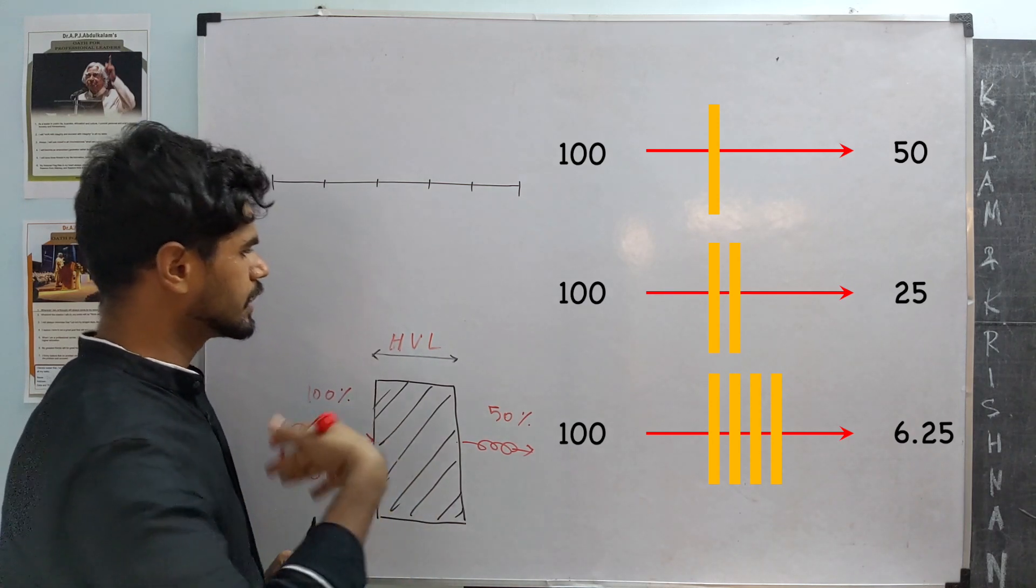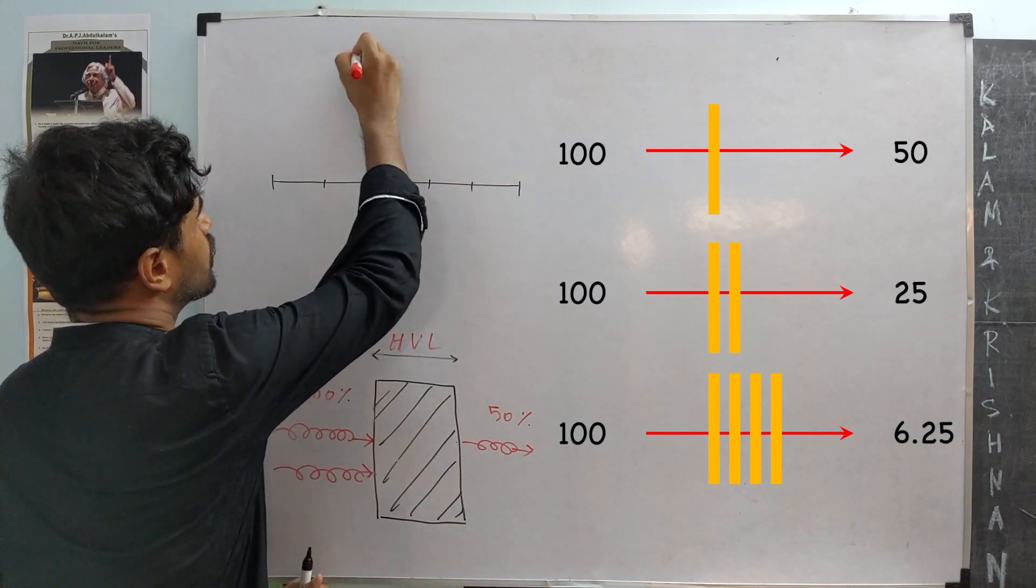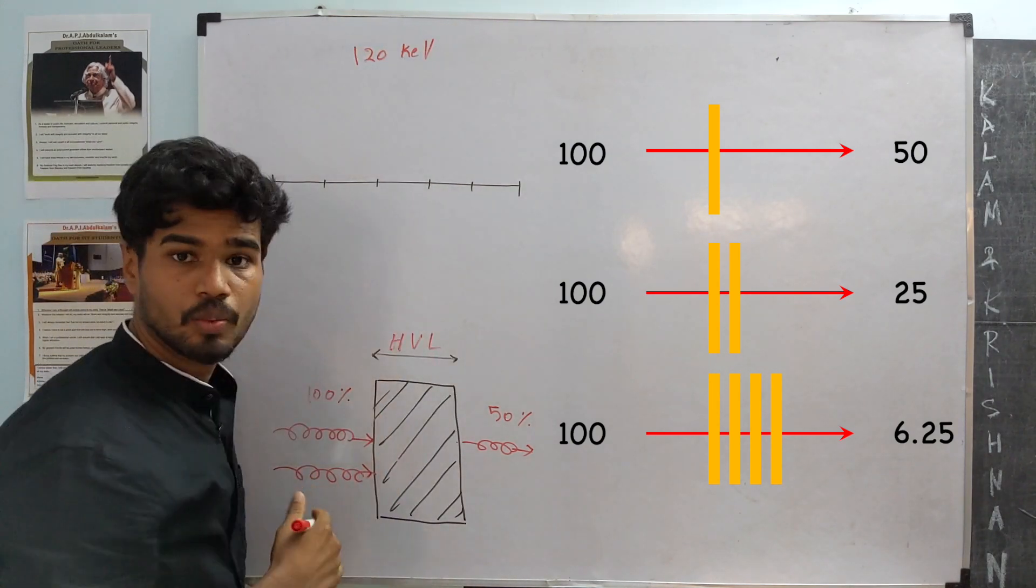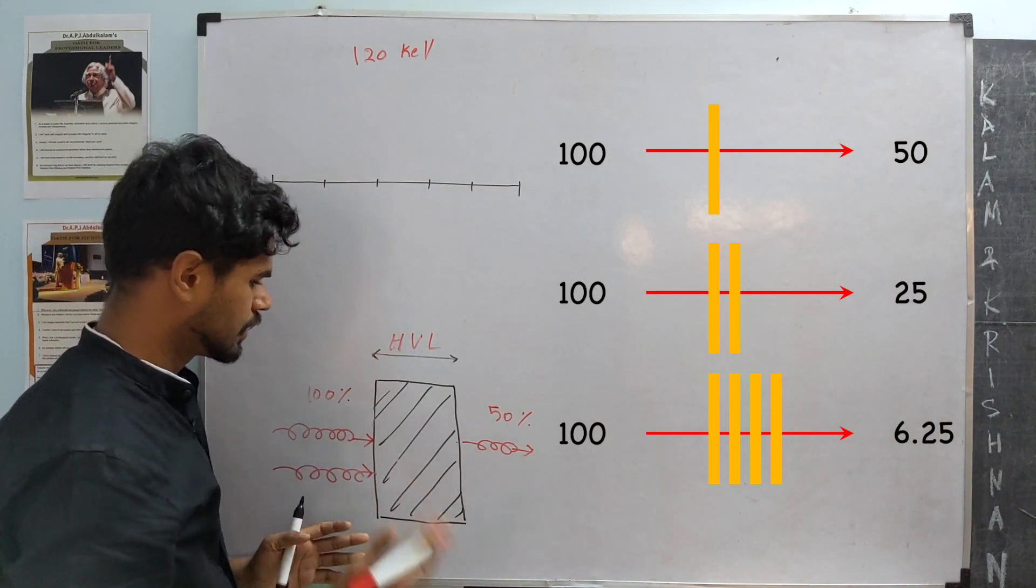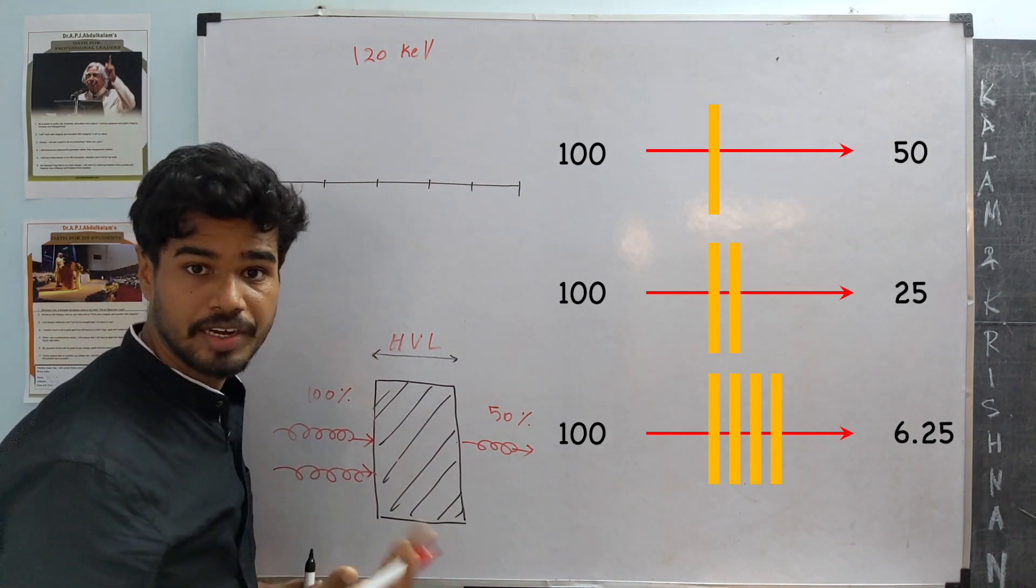Okay. So, now let's look at the example problem. What we are given is, we are given, first of all, it says 120 kilo electron volts. Why is that? Because this concept of half-value layer, it is a nice approximation when you are talking about monochromatic light.